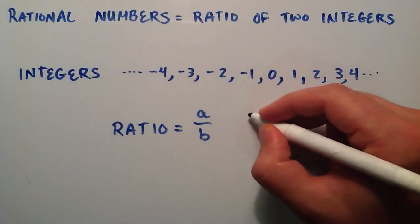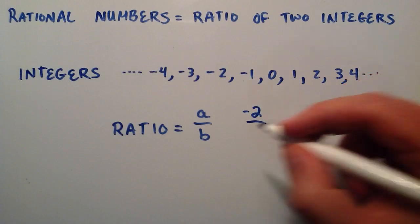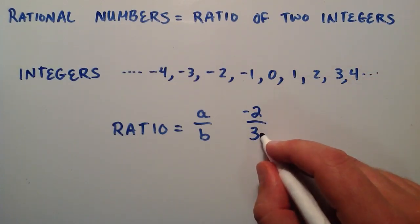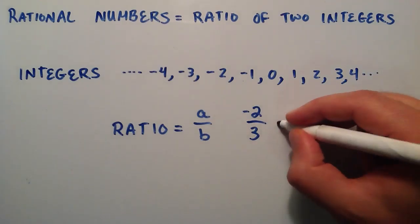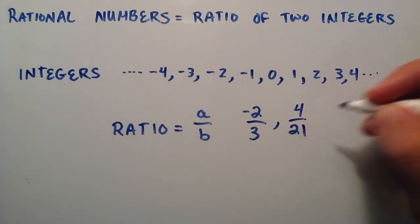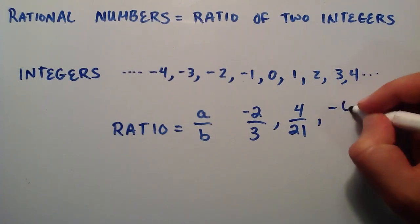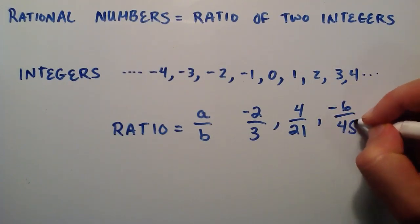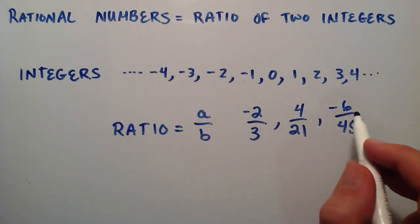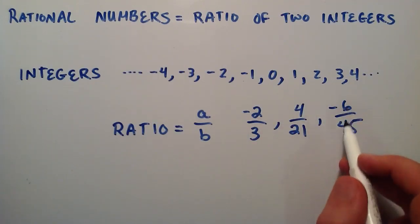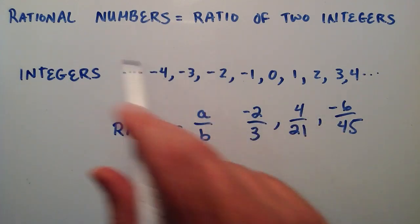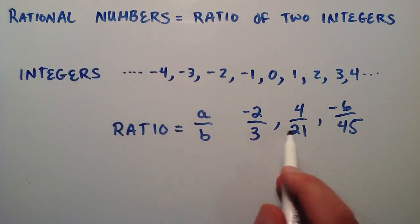For example we could pick the number negative two as our A, and we could pick three as our B. Both of these are integers, so therefore we have a rational number. We could write the ratio four divided by twenty-one. We could say negative six over forty-five. All of these are ratios, and there's an integer in the numerator and an integer in the denominator of all of these, so therefore we have made three different rational numbers.